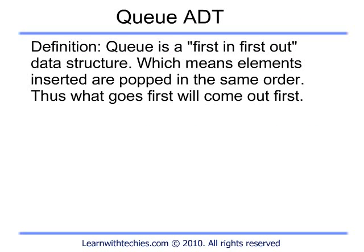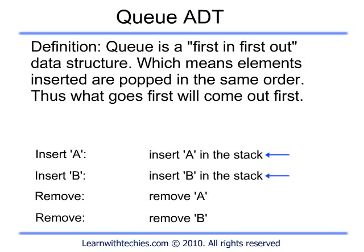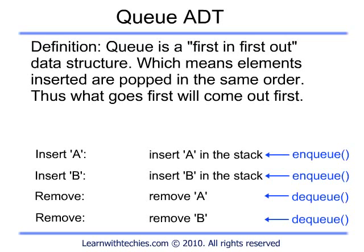Queue is a first-in-first-out data structure, which means if we insert element A and element B in a queue, the order of removal will be A and then B. The insertion operation is called NQ, while the removal operation is called DQ.